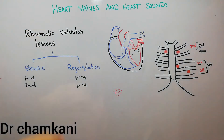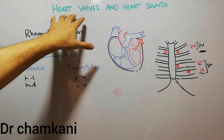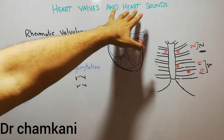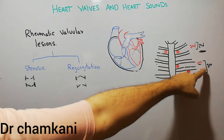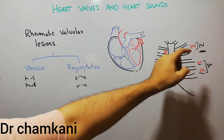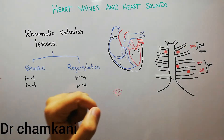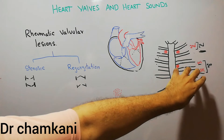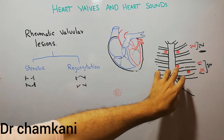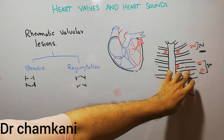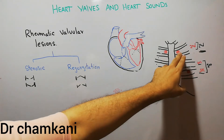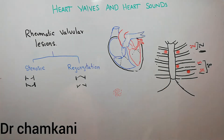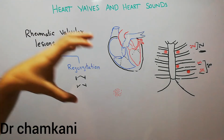In our last lecture we discussed heart sounds — the first heart sound and the second heart sound. The first heart sound is due to the closure of the mitral and the tricuspid valve, and the second heart sound is due to the closure of the aortic and the pulmonary valve.